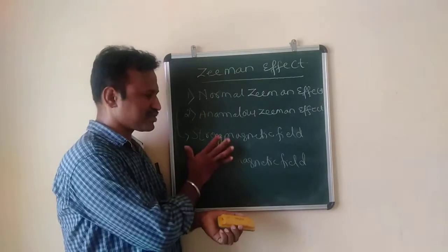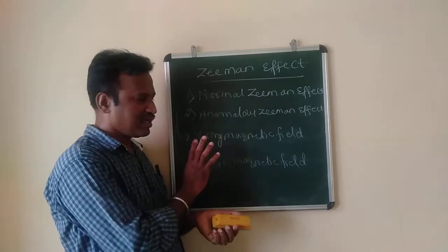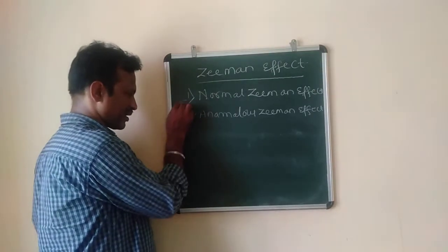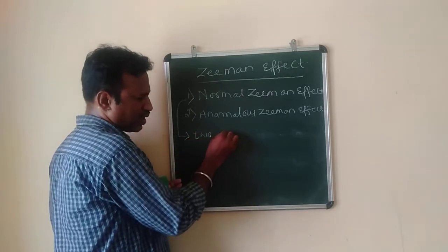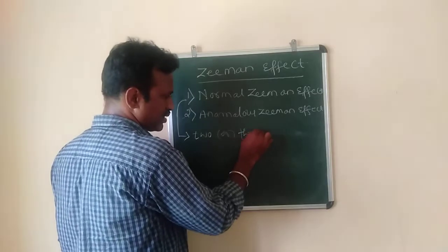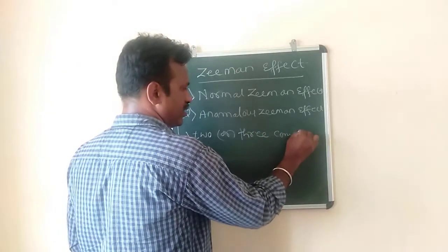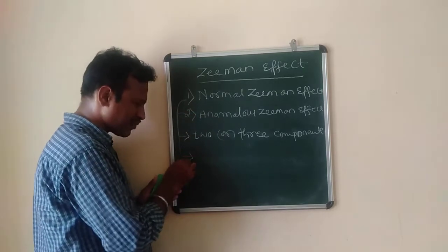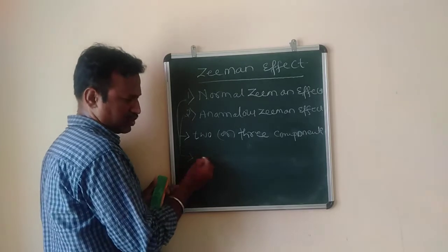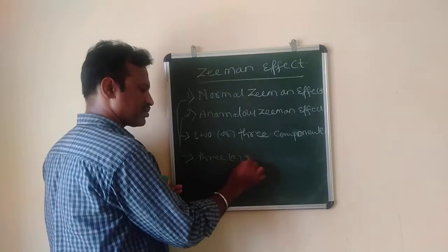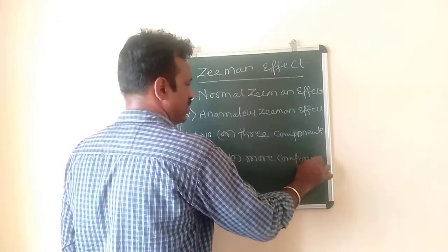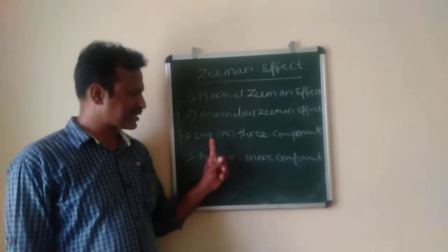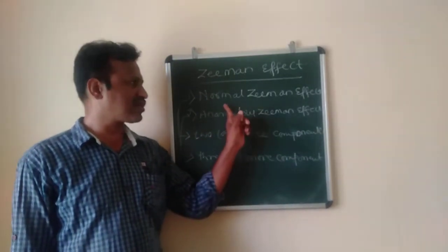There is a classification of Zeeman effect based on the magnetic field you choose to place the source of light. Based on the splitting up of spectral lines, Zeeman effect is classified into normal and anomalous. If there is a splitting up of the spectral line into two or three components, that is called normal Zeeman effect. And if there is a splitting up of the spectral line into three or more components, then that is what we call anomalous Zeeman effect.